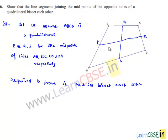In order to prove this, let us join PQ, QR, SR, and PS such that PQRS forms a quadrilateral.